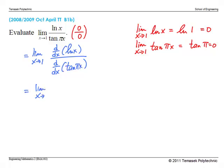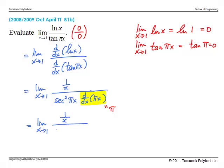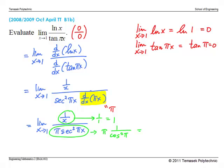Evaluating the derivatives: the numerator gives 1/x, and the denominator gives sec²(πx) · d/dx(πx). Since d/dx(πx) = π, we have the limit as x → 1 of 1/(x · π · sec²(πx)). The numerator limit is 1/1 = 1. The denominator is π · (1/cos²(π)) = π · (1/(−1)²) = π. Therefore, by the division rule, the answer is 1/π.